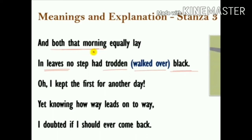'In leaves no step had trodden black' — trodden black refers to the path which turns black by crushing the leaves; the colour was still yellow, symbolising it was not used by others. The poet remains committed to his decision, saying he will save the other road for another day. This symbolises he will make the other choice later — but he also observes that way leads on to way, and he will probably never pass this way again, meaning he will not be able to take the second choice at all.